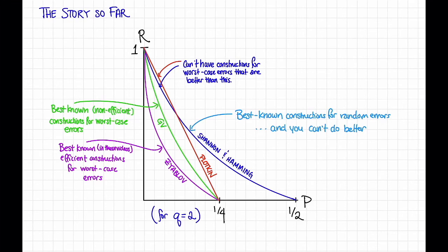So I've switched up the plot a little bit. Usually on the x-axis here, I have the relative distance delta, and I've changed it now to have p, which is a fraction of errors, or an expected fraction of errors in the random case. Recall that a code of distance delta can correct up to a delta over two fraction of worst case errors. And so when I go from delta to p for the worst case errors stuff, I need to divide everything by two. So that's why this ends at a half when it normally ends at one. Okay, so given that change, here's how we can plot everything together. Here we have the Hamming bound, which is an impossibility result for worst case errors. It says we cannot have constructions for worst case errors, a p fraction of worst case errors, that have rate better than this.